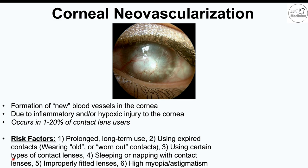Additional risk factors for corneal neovascularization include sleeping or napping with contact lenses in — since eyes closed over the lens limits oxygen to the cornea — improperly fitted contact lenses, and high myopia or astigmatism. This last factor is likely because lenses correcting for these conditions tend to be thicker, which impairs oxygen delivery to the cornea and increases the risk for corneal neovascularization.